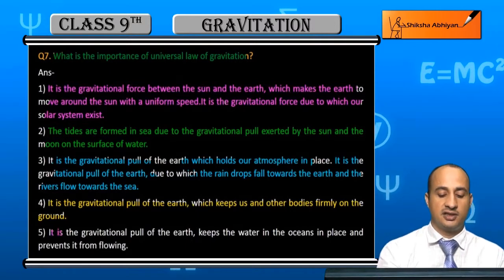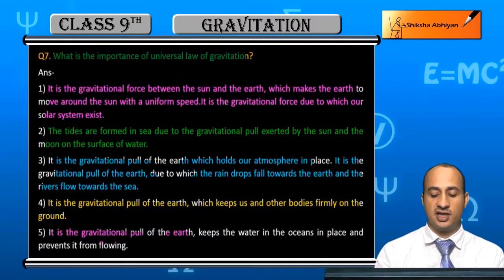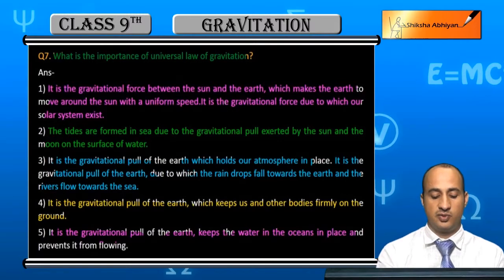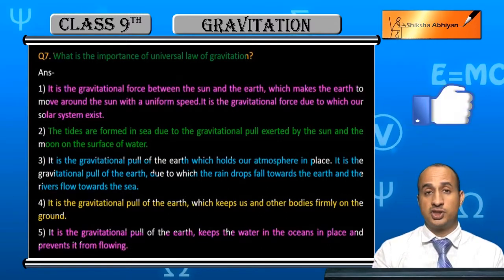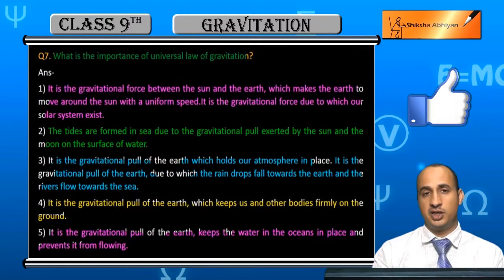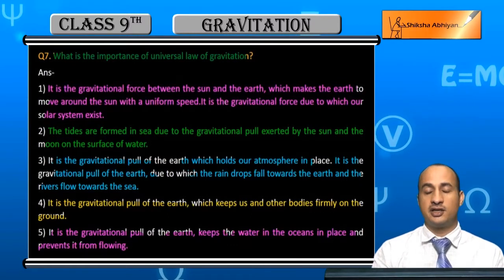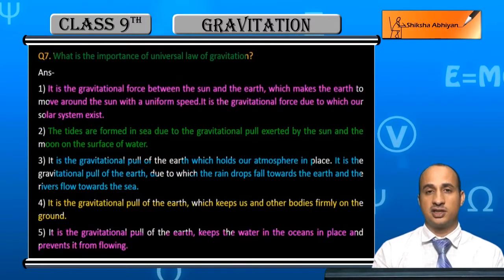Now students, if we look at this gravitational pull, Earth keeps the water in the oceans in place and prevents it from flowing. The water in the ocean or river is held by gravitational pull. Otherwise, it would escape from the universe.